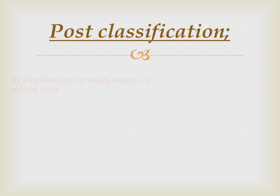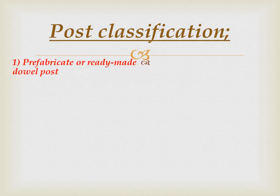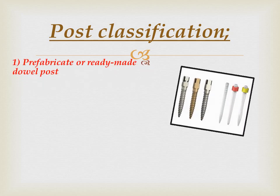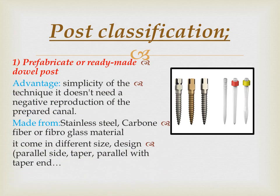Post classification: number one is the prefabricated post, which is already made. It is made from stainless steel, carbon fiber, or fiberglass material, comes in different sizes and designs, and has the advantage of simplicity of technique because it does not require a negative reproduction of the prepared canal.